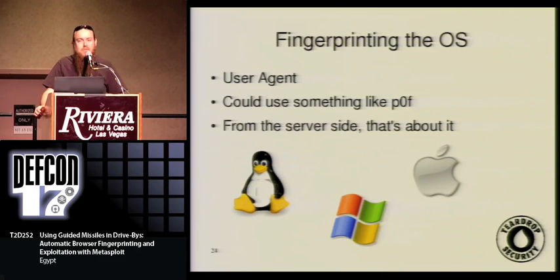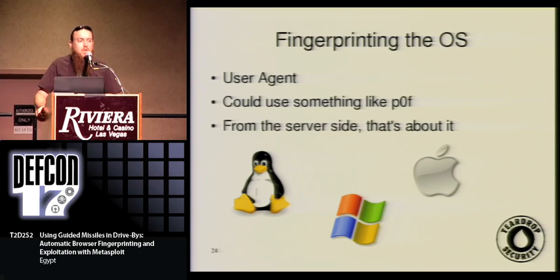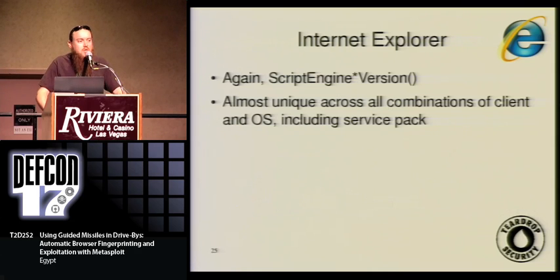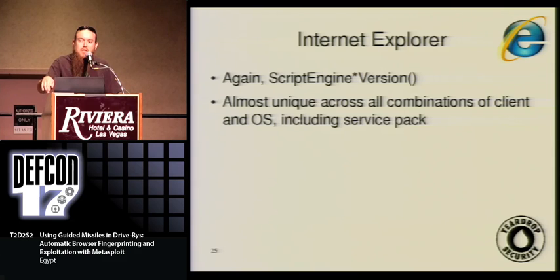Fingerprinting the OS from the server side using the traditional user agent string matching is subject to the same problems. We could also use something like p0f for passive fingerprinting using TCP artifacts. But that sounds like work. So we use JavaScript. With Internet Explorer, it basically gives us everything — we know the operating system, what version, and what service pack level. I can reliably tell the difference between XP service pack 0 and 1, XP service pack 1 and 2.